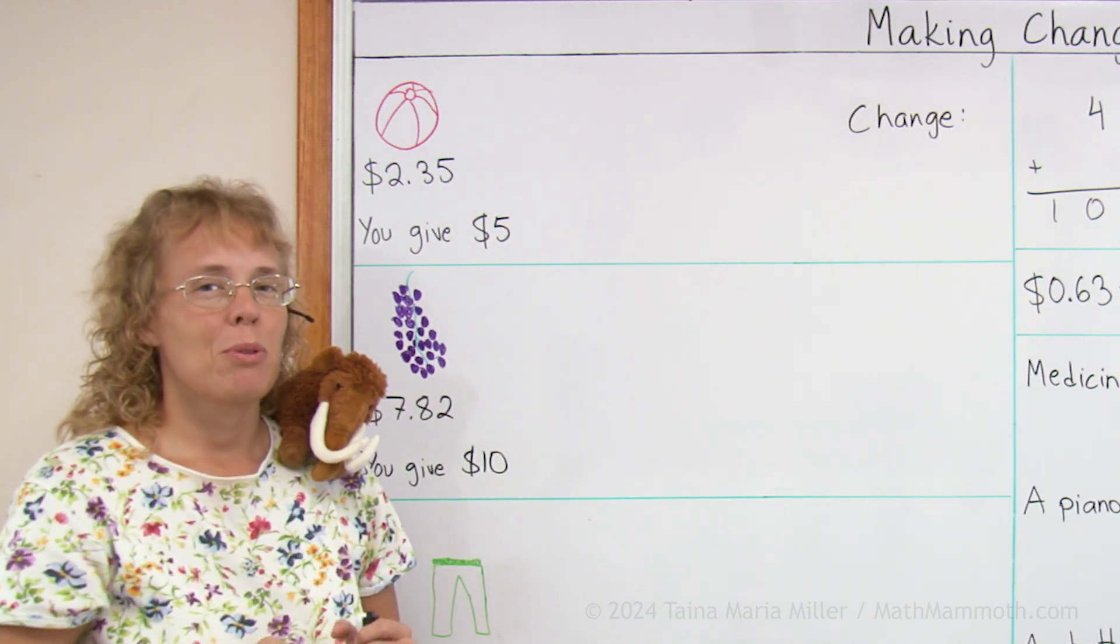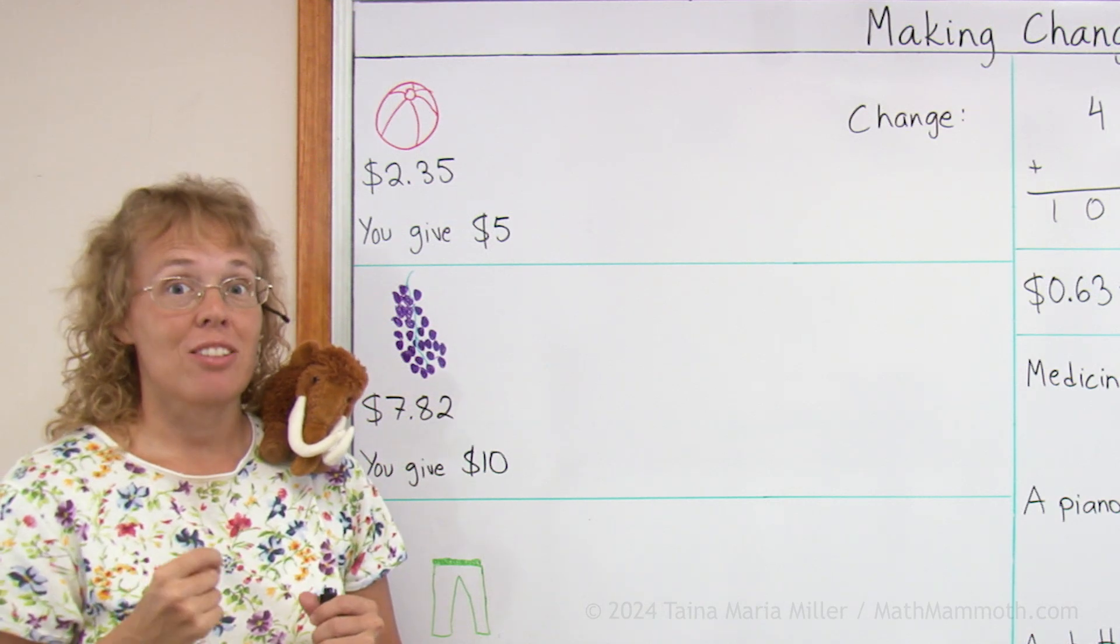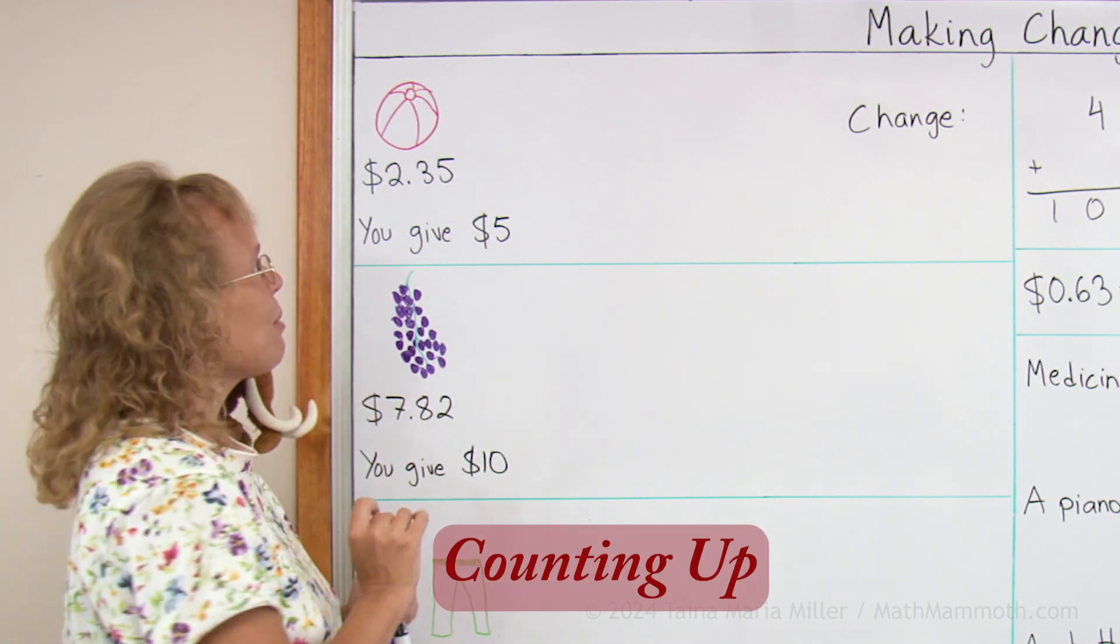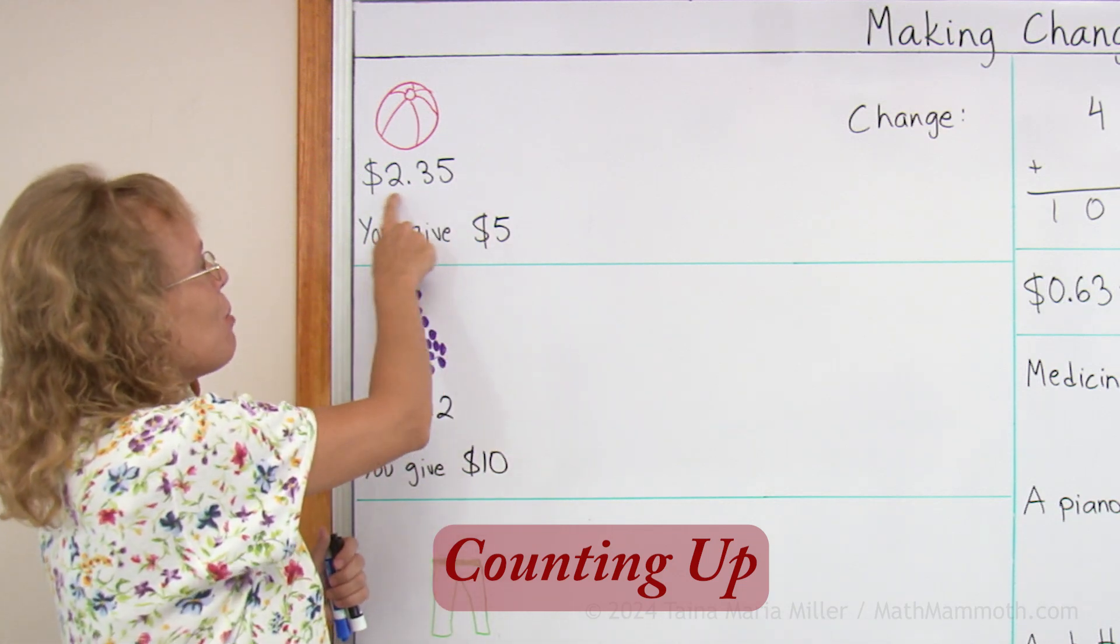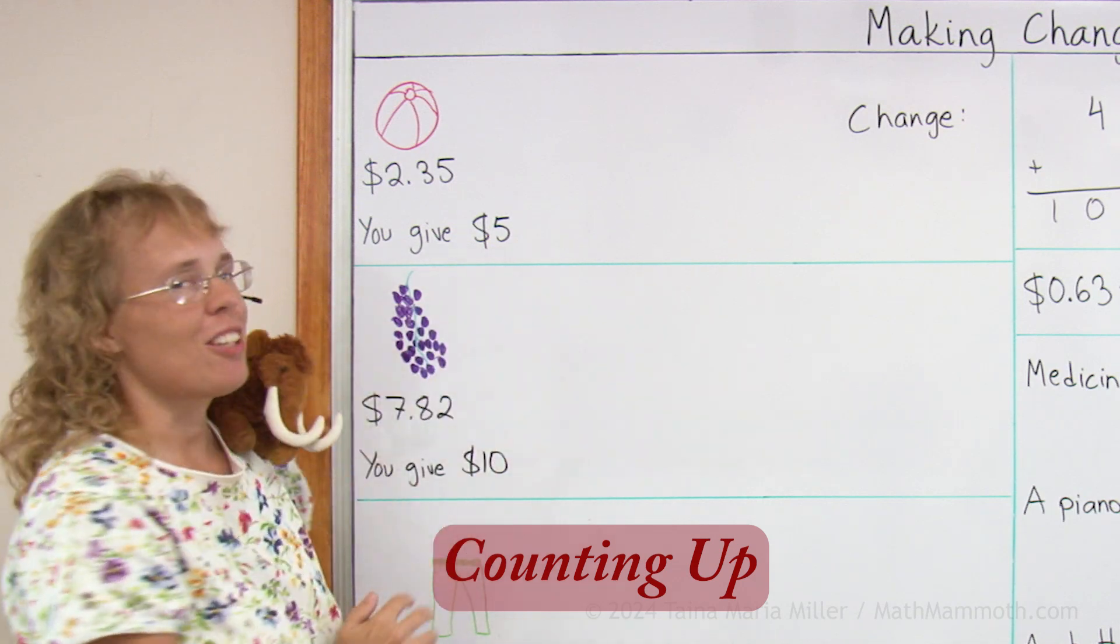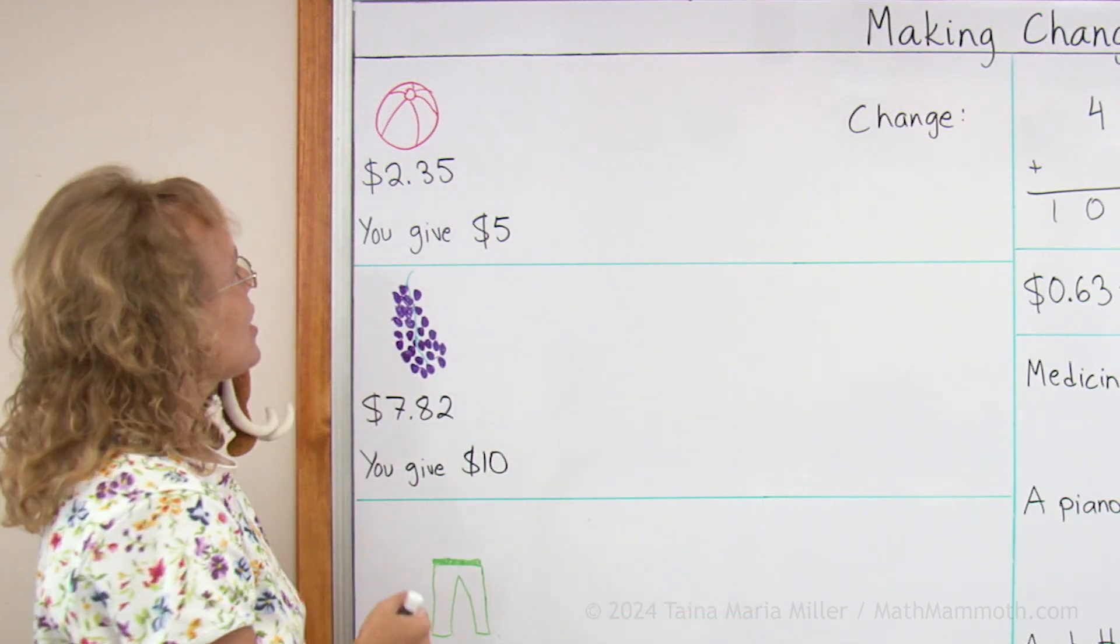But in this problem we are going to study a method for finding the change which is called counting up. And that means that we start with this amount and we count up until we reach $5. This is how it goes.